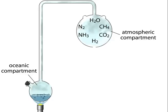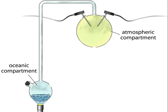Miller and Urey used electrical sparks to simulate lightning in the early atmosphere.